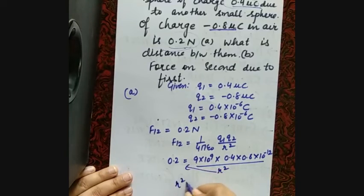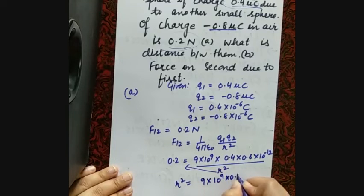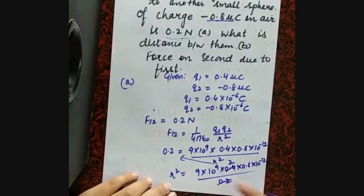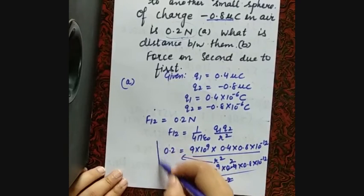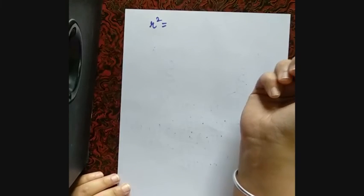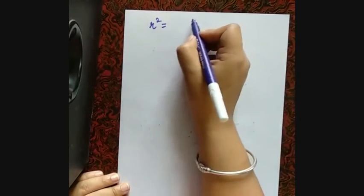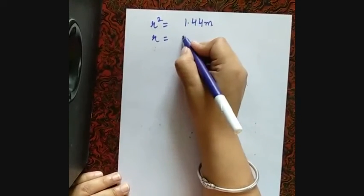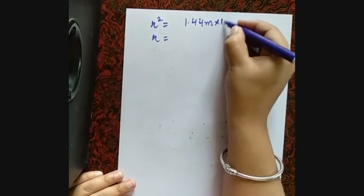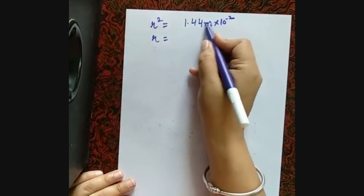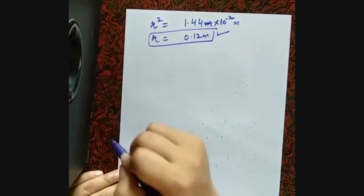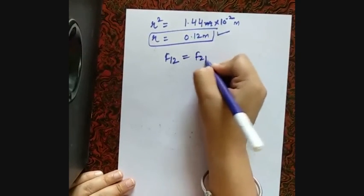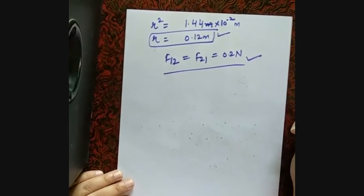After simplification, r² = 9×10⁹ × 0.32×10⁻¹² / 0.2 = 9×10⁻³ × 1.6 = approximately 1.44×10⁻². Taking the square root: r = 0.12 meters. This is the distance between the two charges. The force on the second charge due to the first follows Newton's third law, so it is equal in magnitude: 0.2 N. I hope you got it.